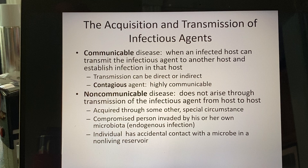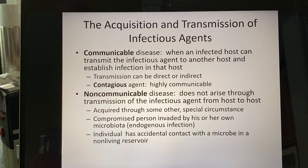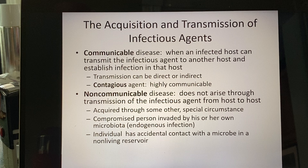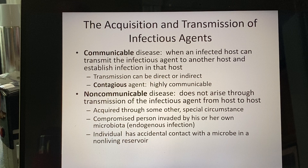If we take that a little further, the term contagious means highly communicable. For example, HIV is communicable — it can be passed from person to person — however, it requires either really intimate sexual contact or blood-to-blood contact, so it's not contagious, but it is communicable. Contagious would be COVID-19, because it's spread through the respiratory route and easily passed from person to person. Rhinovirus and influenza would also fit into that, when we see flu epidemics every year. Contagious just means highly communicable.